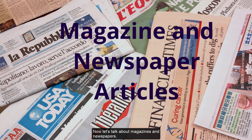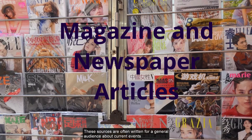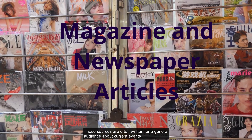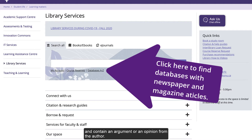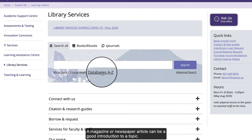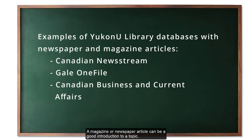Now let's talk about magazines and newspapers. These sources are often written for a general audience about current events and contain an argument or an opinion from the author. A magazine or newspaper article can be a good introduction to a topic. Check out Canadian News Stream, Gale OneFile, or Canadian Business and Current Affairs databases.